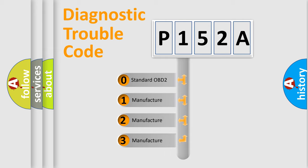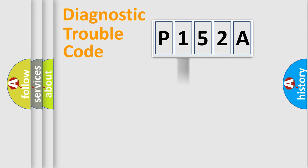If the second character is expressed as zero, it is a standardized error. In the case of numbers 1, 2, 3, it is a more specific expression of the car-specific error.